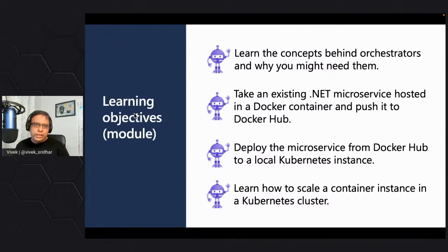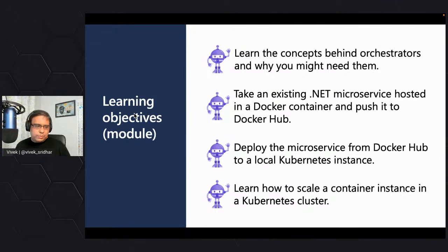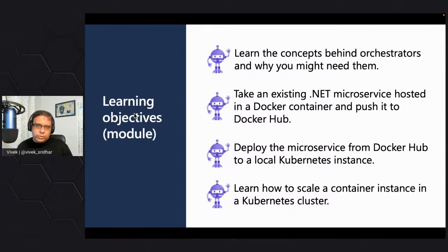Last week we basically built a microservice application from a .NET app. We built it and deployed it locally, and then deployed it as a Docker Compose. This week, what we're going to do is learn about the complex orchestrator which is Kubernetes — what is Kubernetes, why it is required, what is the need for container management systems, how does resilience work, and how do you scale?